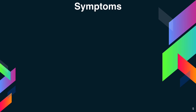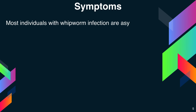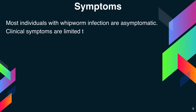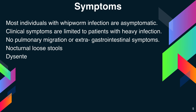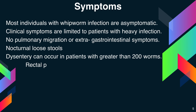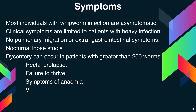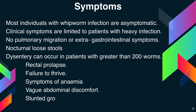Next, coming to the symptoms. Most individuals with whipworm infection are asymptomatic. Clinical symptoms are limited to patients with heavy infection. There is no pulmonary migration or extra-gastrointestinal symptoms. Nocturnal loose stools and dysentery can occur in patients with greater than 200 worms. Additional symptoms include rectal prolapse, failure to thrive, symptoms of anemia, vague abdominal discomfort, and stunted growth.